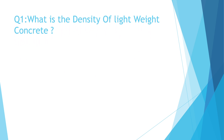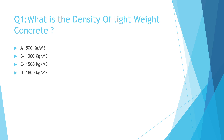Question number 1: What is the density of lightweight concrete? a. 500 kg/m³, b. 1000 kg/m³, c. 1500 kg/m³, d. 1800 kg/m³. The correct answer is b. 1000 kg/m³.